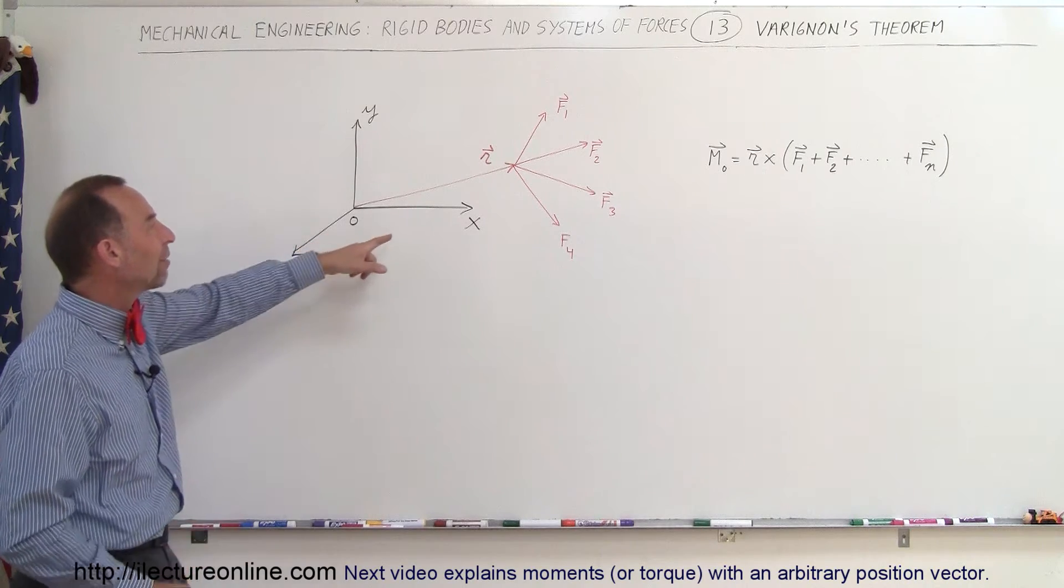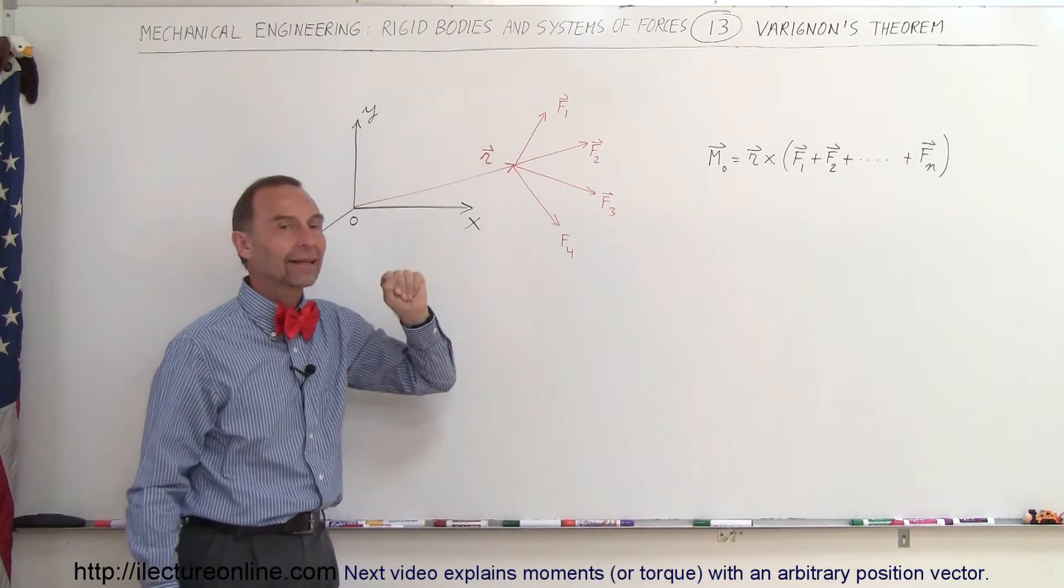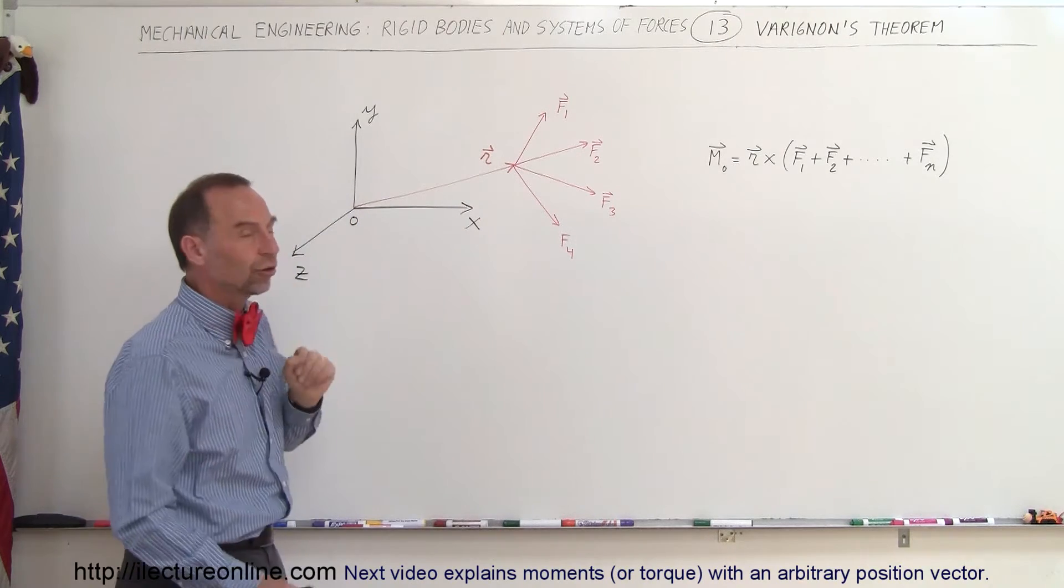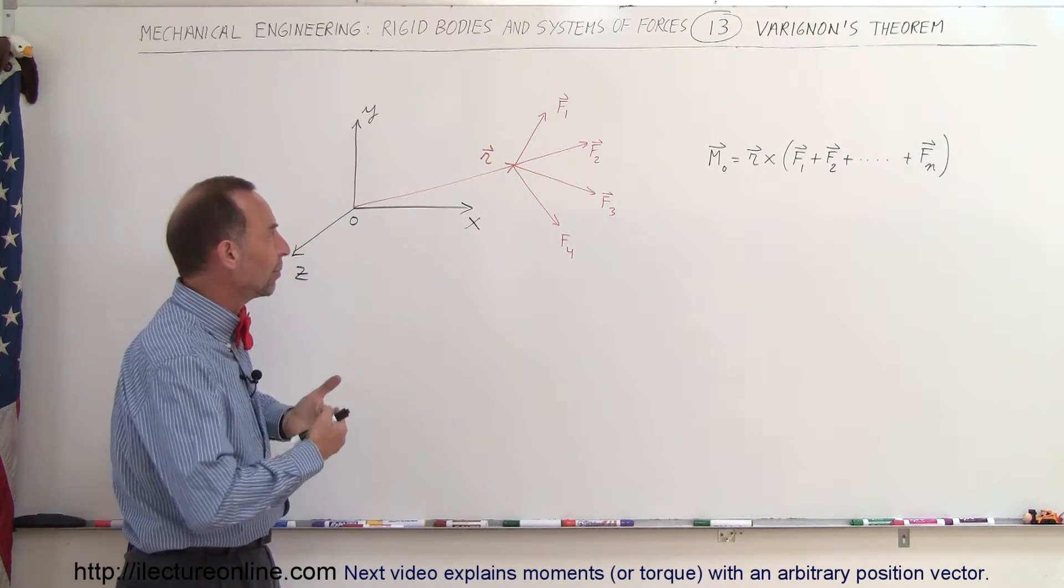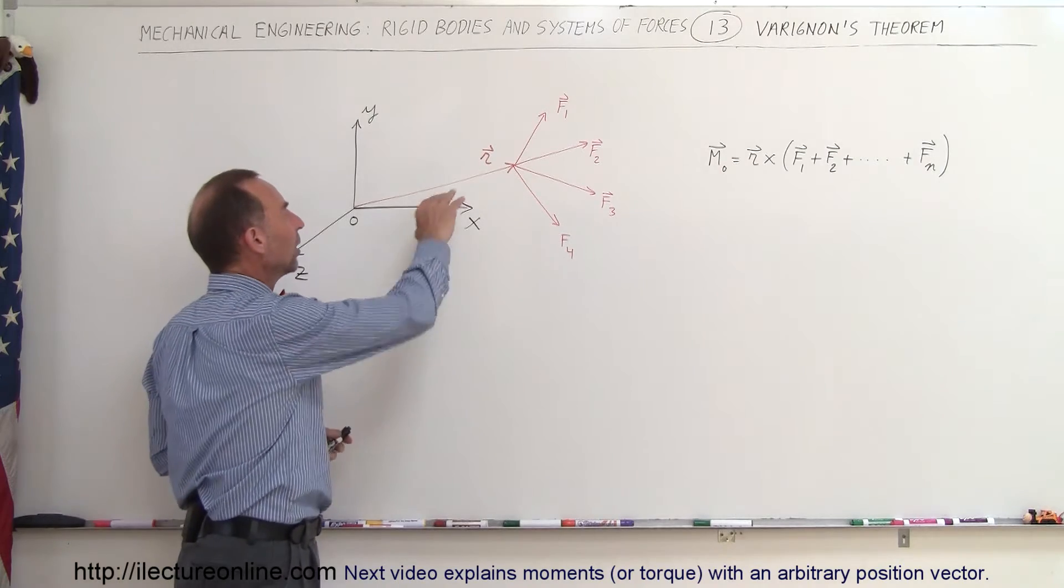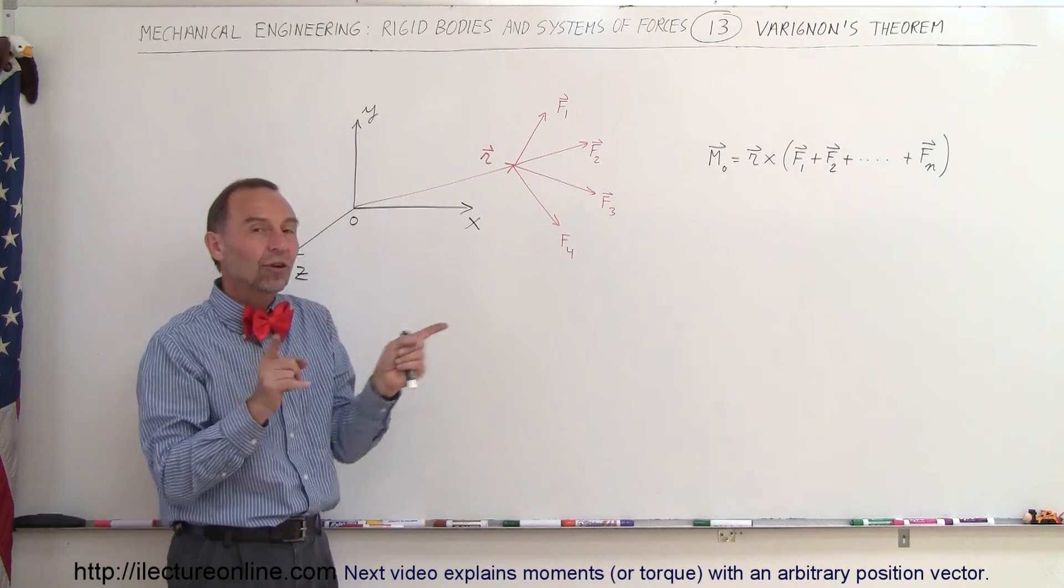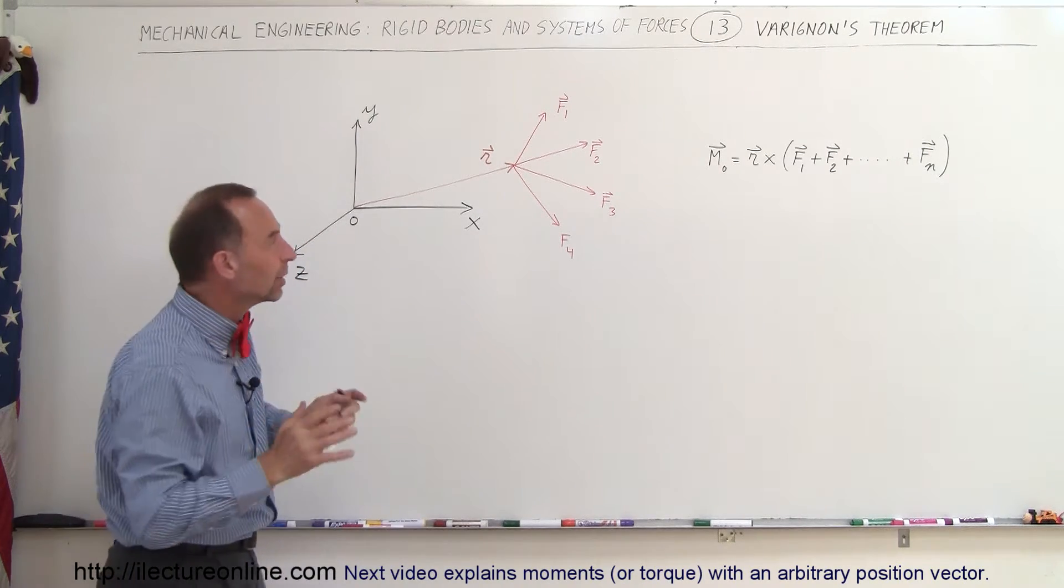Well, let's say that we have a point where all the forces are acting on at a distance r away from the origin. And of course the distance r is a position vector. It's the moment r. And you can see that the forces are acting in all different directions in three-dimensional space.